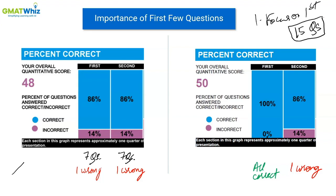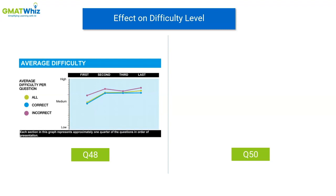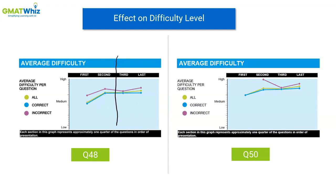The first student who made a mistake in the first quarter could have made a silly mistake. Let's now look at the effect on the difficulty level of the questions that the two students got. On the left side, we look at the difficulty level for the student who scored Q48. On the Y-axis is difficulty level; on the X-axis are the various quarters. We'll focus on the first two quarters.